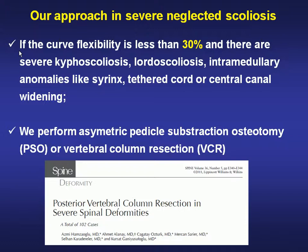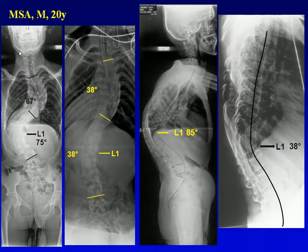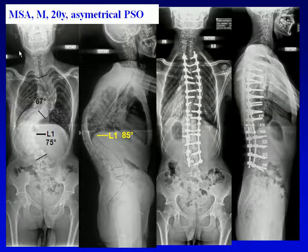If the curve flexibility is less than 30%, or if there are severe kyphoscoliosis or lordoscoliosis, we perform asymmetrical pedicle subtraction osteotomy or vertebral column resection. You can see a very severe thoracolumbar junction kyphoscoliosis where pedicle subtraction osteotomy was performed, and at the second stage we performed anterior support due to severe osteoporosis.